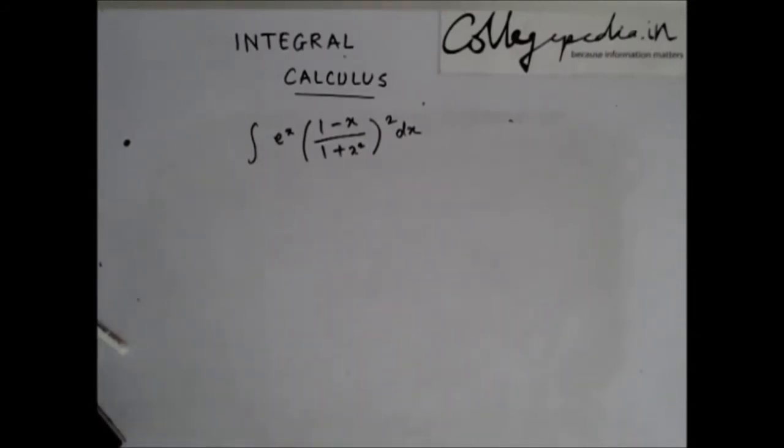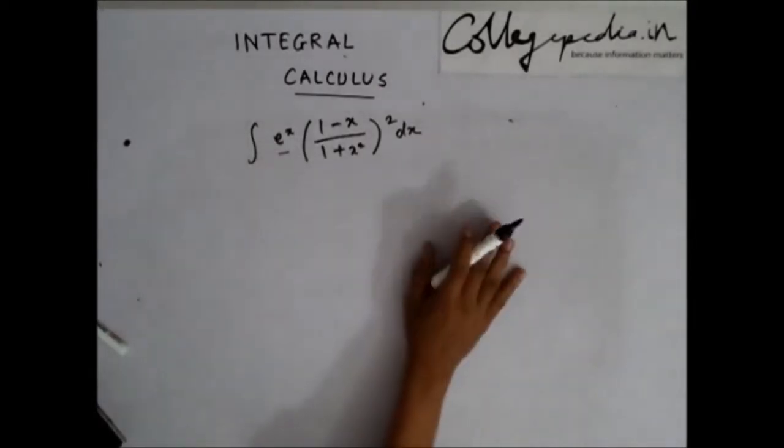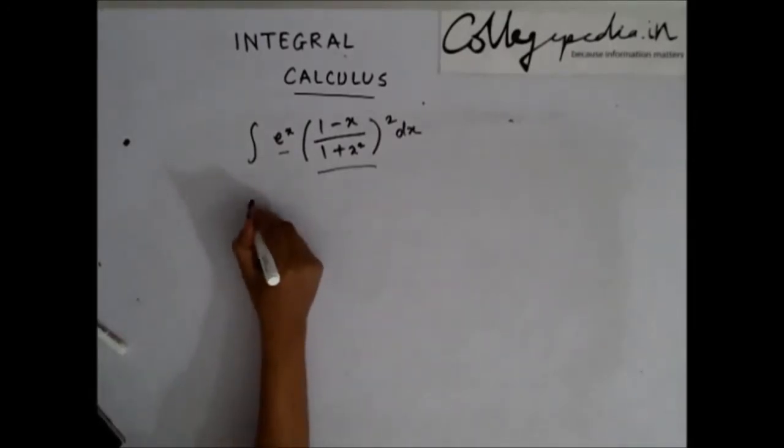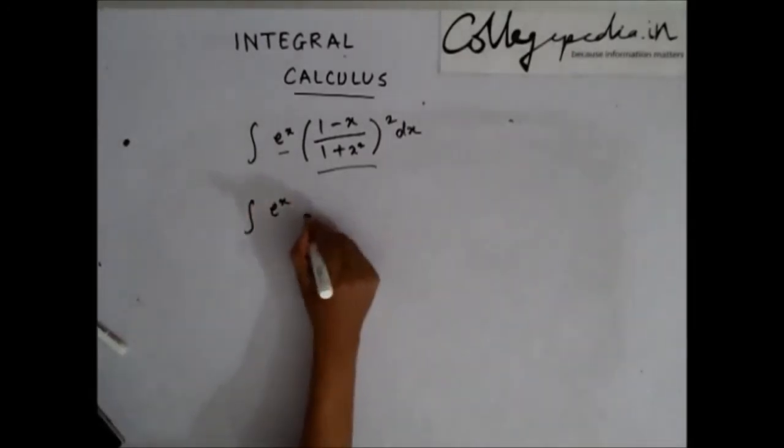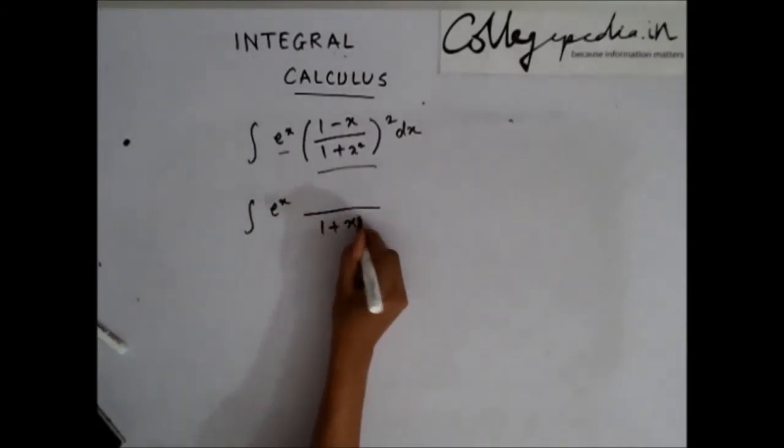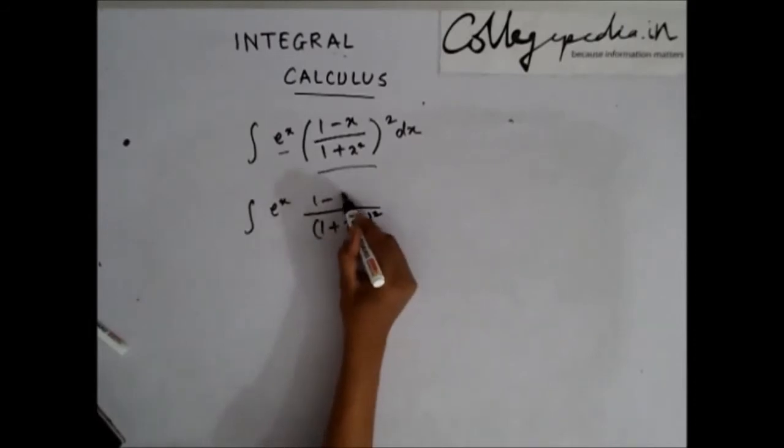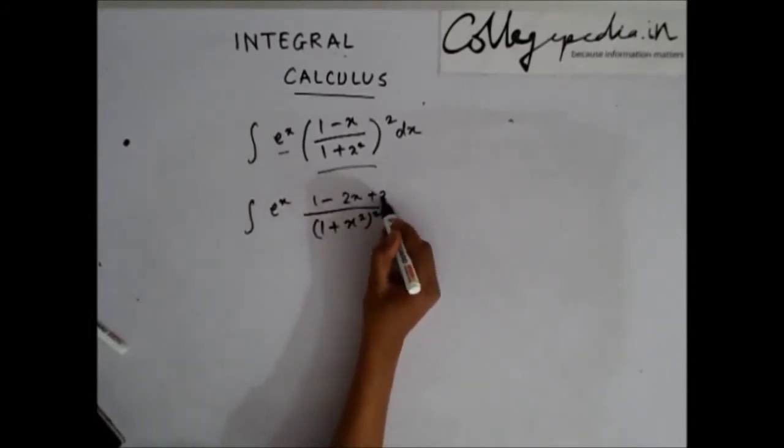Here, you see that you have e^x, but what about this part? How do we solve this? Solve this, let's go step by step. First, what I'll do is I can write this as (1 - 2x + x²)/(1 + x²)².